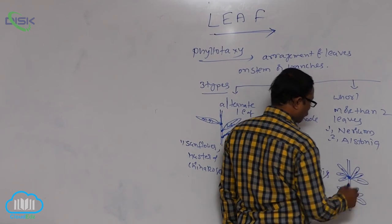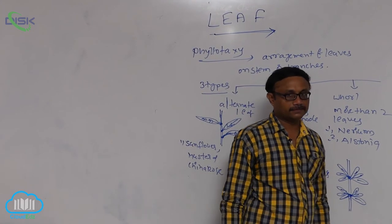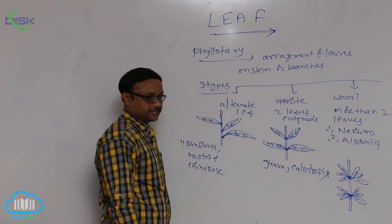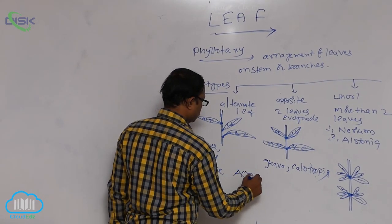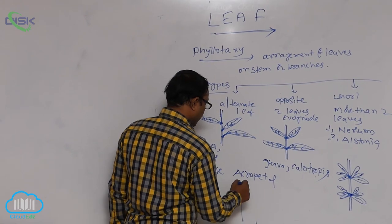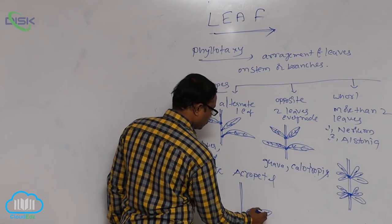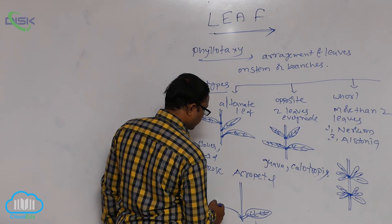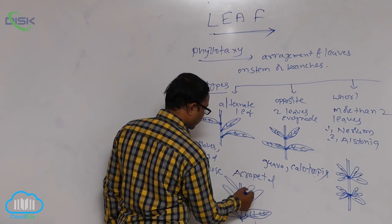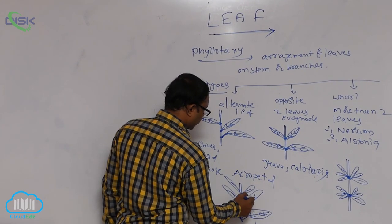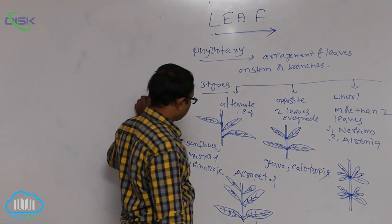Generally, leaves are arranged on the stem in what is known as acropetal succession — succession means sequence. In acropetal arrangement, older and larger leaves are at the basal part, while smaller leaves are arranged at the upper part. This type of arrangement is known as acropetal arrangement.